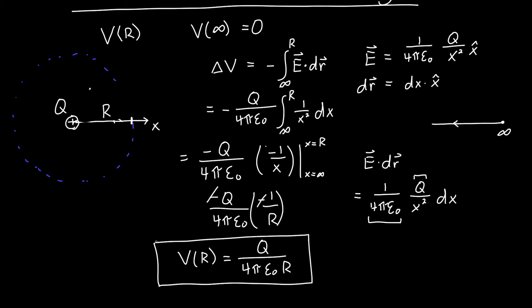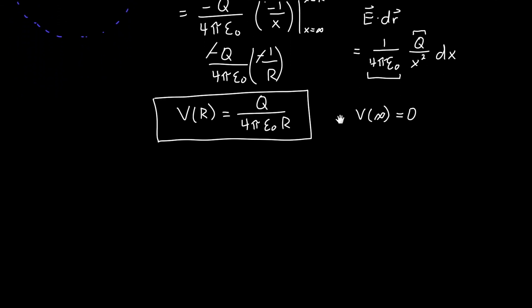This is the potential for a point charge assuming that the potential at infinity is equal to zero. So that's great and all but how do I interpret this?